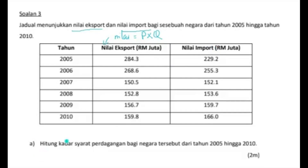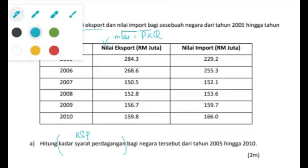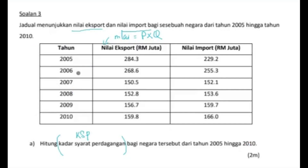Soalan dia: hitung kadar syarat perdagangan, yang kita boleh tulis sebagai KSP, bagi negara tersebut dari tahun 2005 hingga tahun 2010. Apalah rumus bagi kadar syarat perdagangan? Indeks harga ekspor berbanding dengan indeks harga import darab 100.